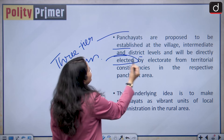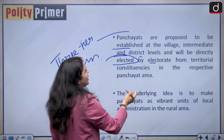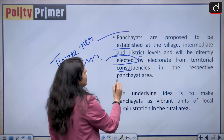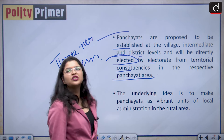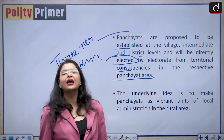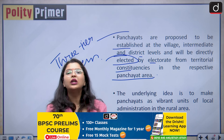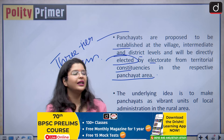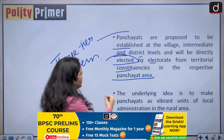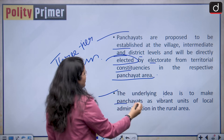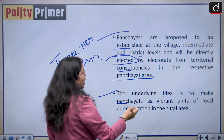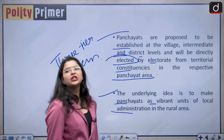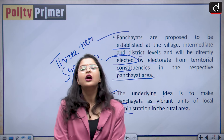Members will be directly elected by the electorate from territorial constituencies in the respective Panchayat area, meaning they will be accountable to the people they are serving directly. The underlying idea is to make Panchayats vibrant units of local administration in the rural areas.